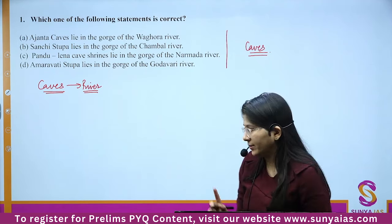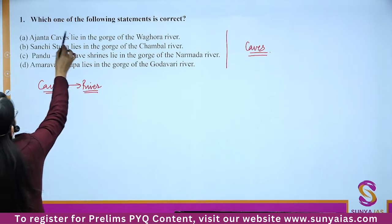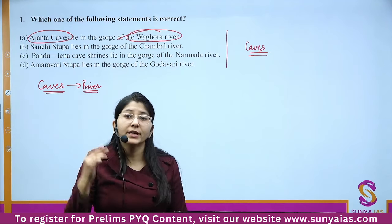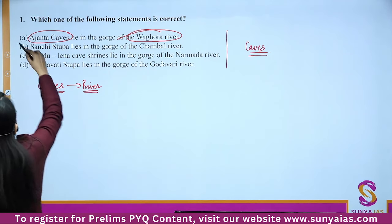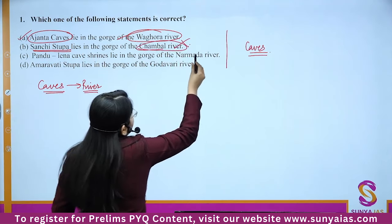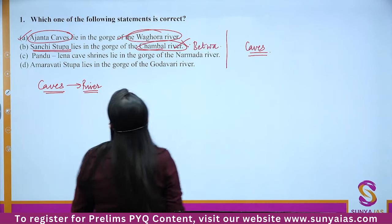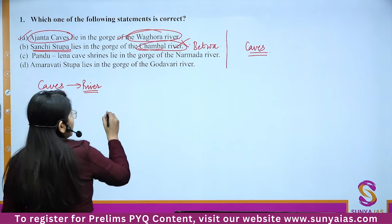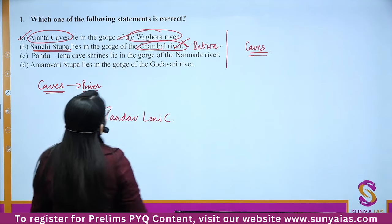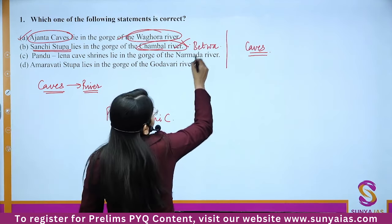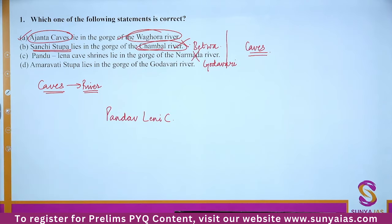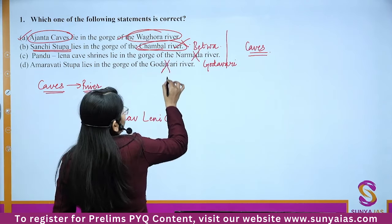Write down the theme: caves. Ajanta caves lie in the gorge of Wagora River — that gives the correct option. Sanchi Stupa lies not in Chambal but in the Betwa River gorge. Pandu Lena caves, also known as Pandav Leni caves, lie not in the Narmada but in the Godavari. Amravati Stupa lies not in the Godavari but in the Krishna River.